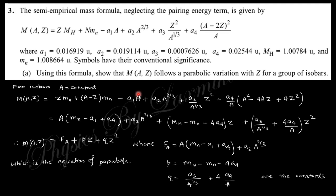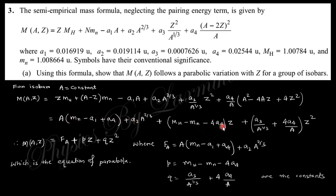To prove this, we substitute Z and N, where N = A − Z (A is the mass number, Z is the atomic number). Expanding the whole square terms and separating out the constant term, the coefficient of Z, and the coefficient of Z², we can retain these as a constant term, a coefficient P, and a coefficient Q. This gives the equation of a parabola, thus proving that M(A,Z) represents a parabolic curve.